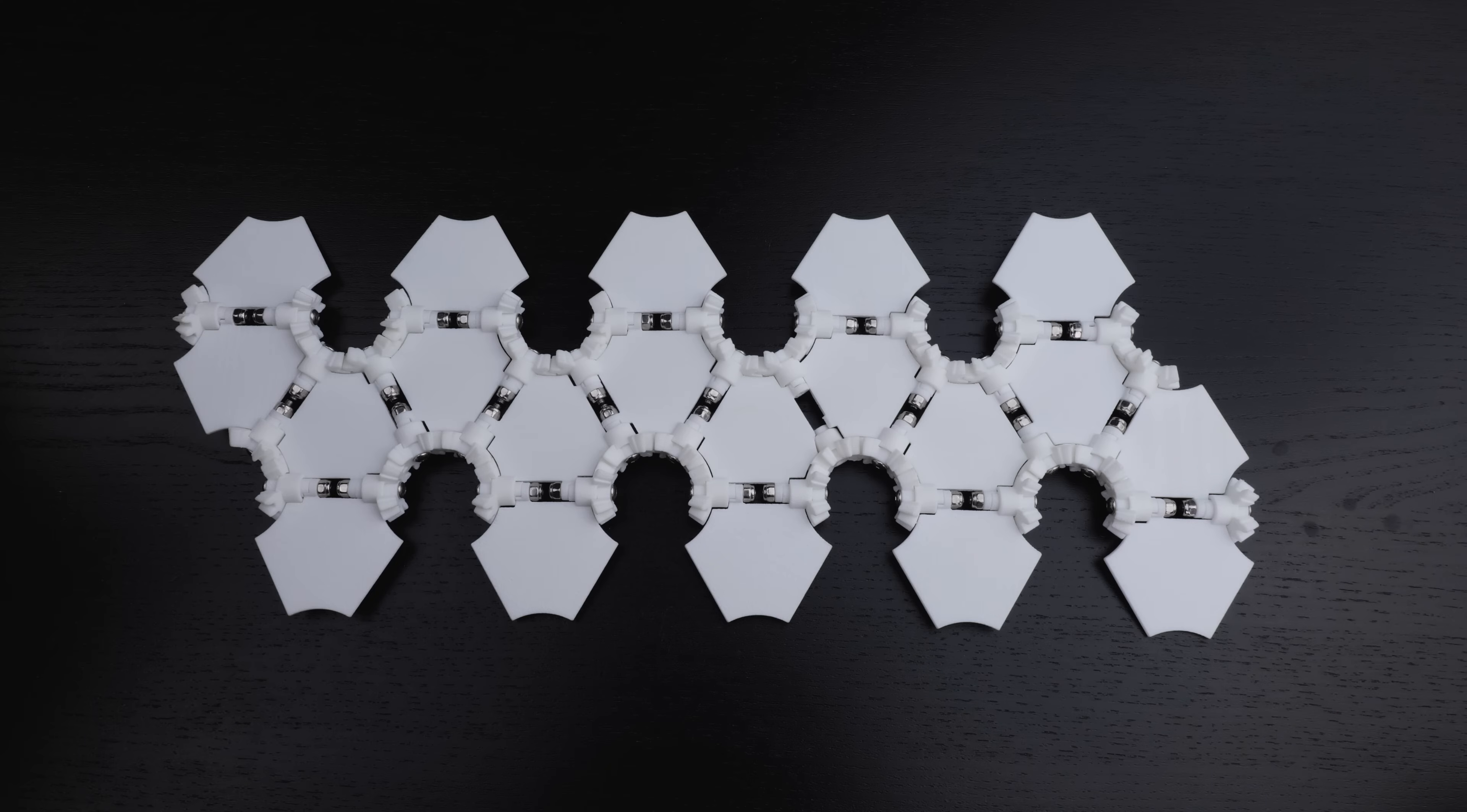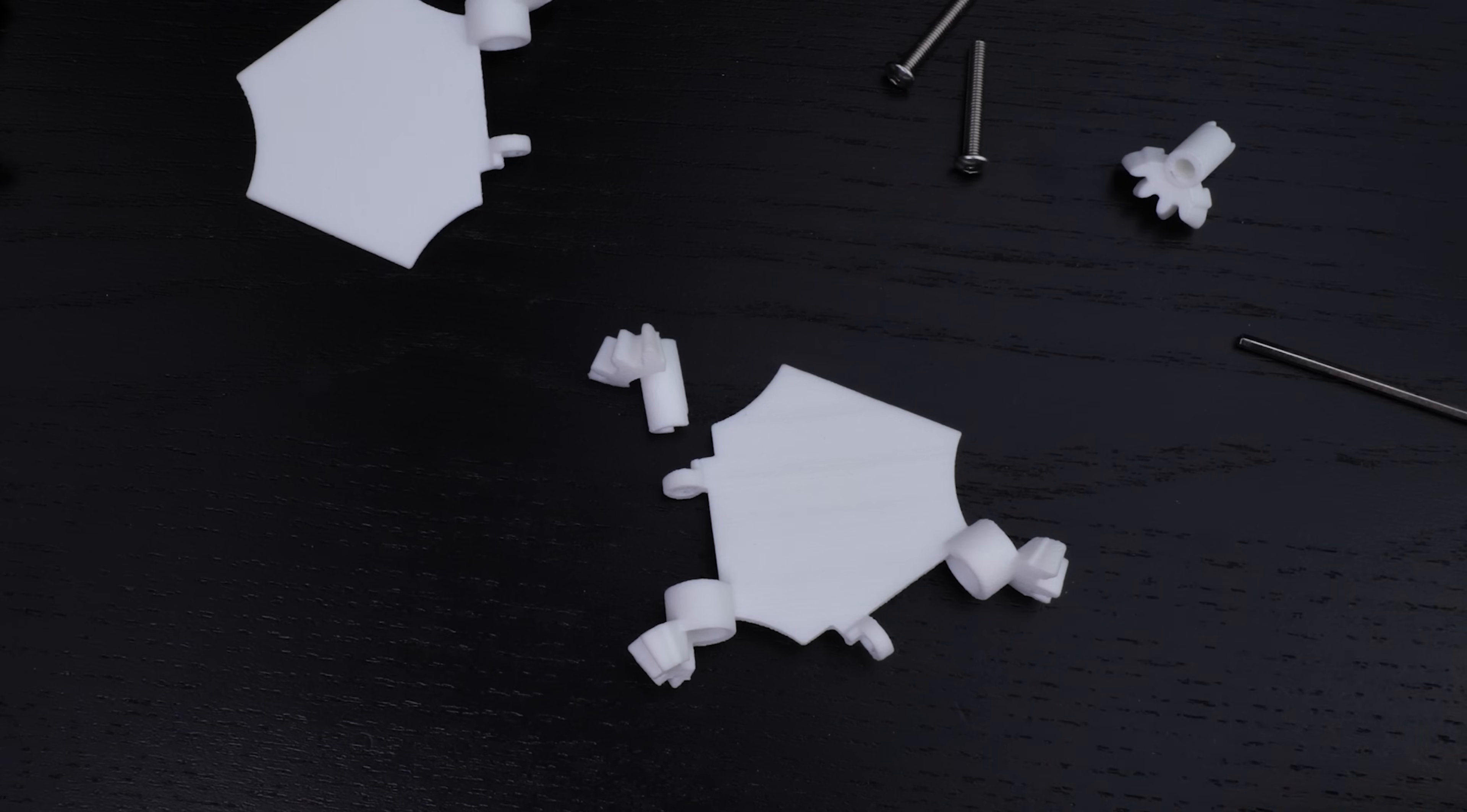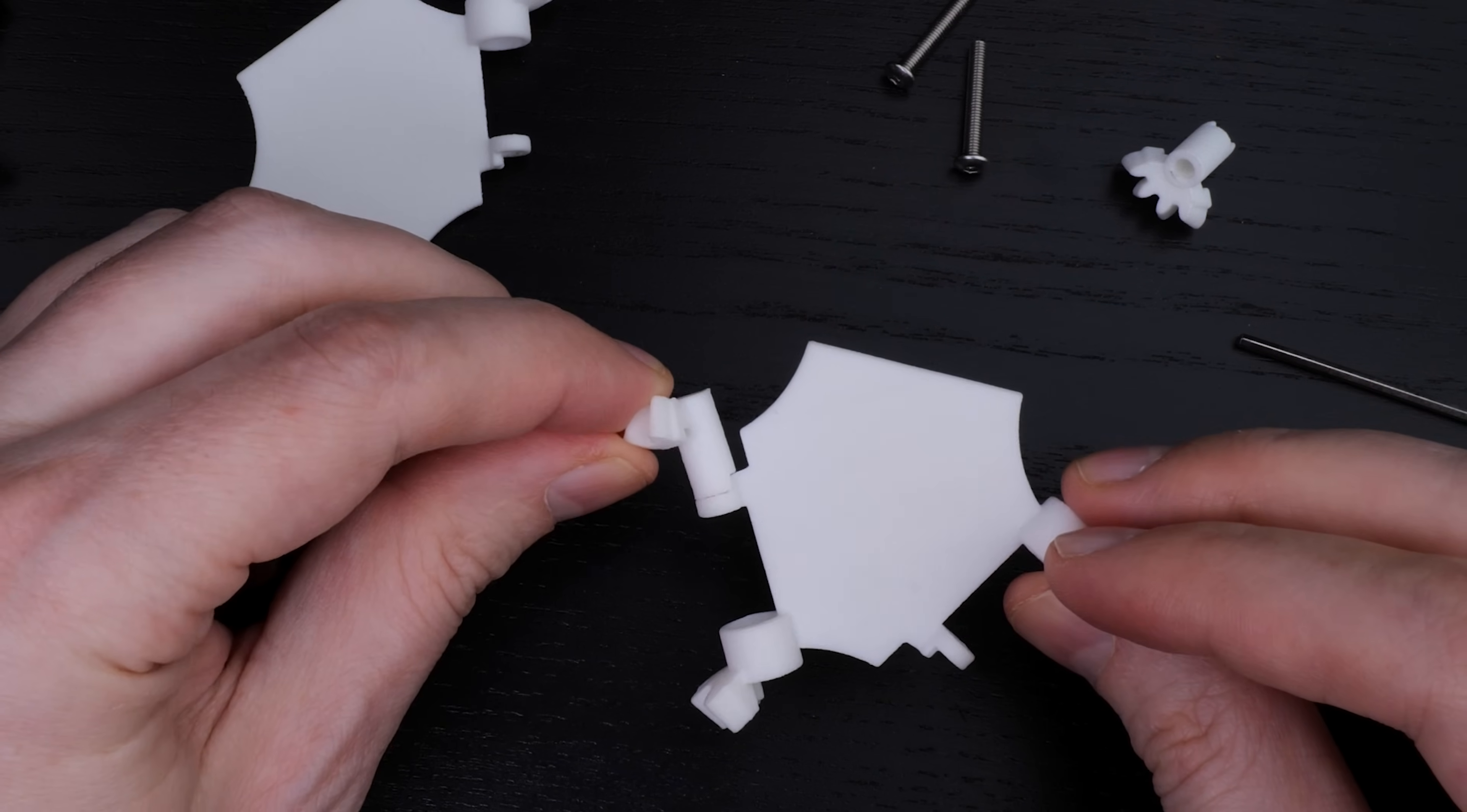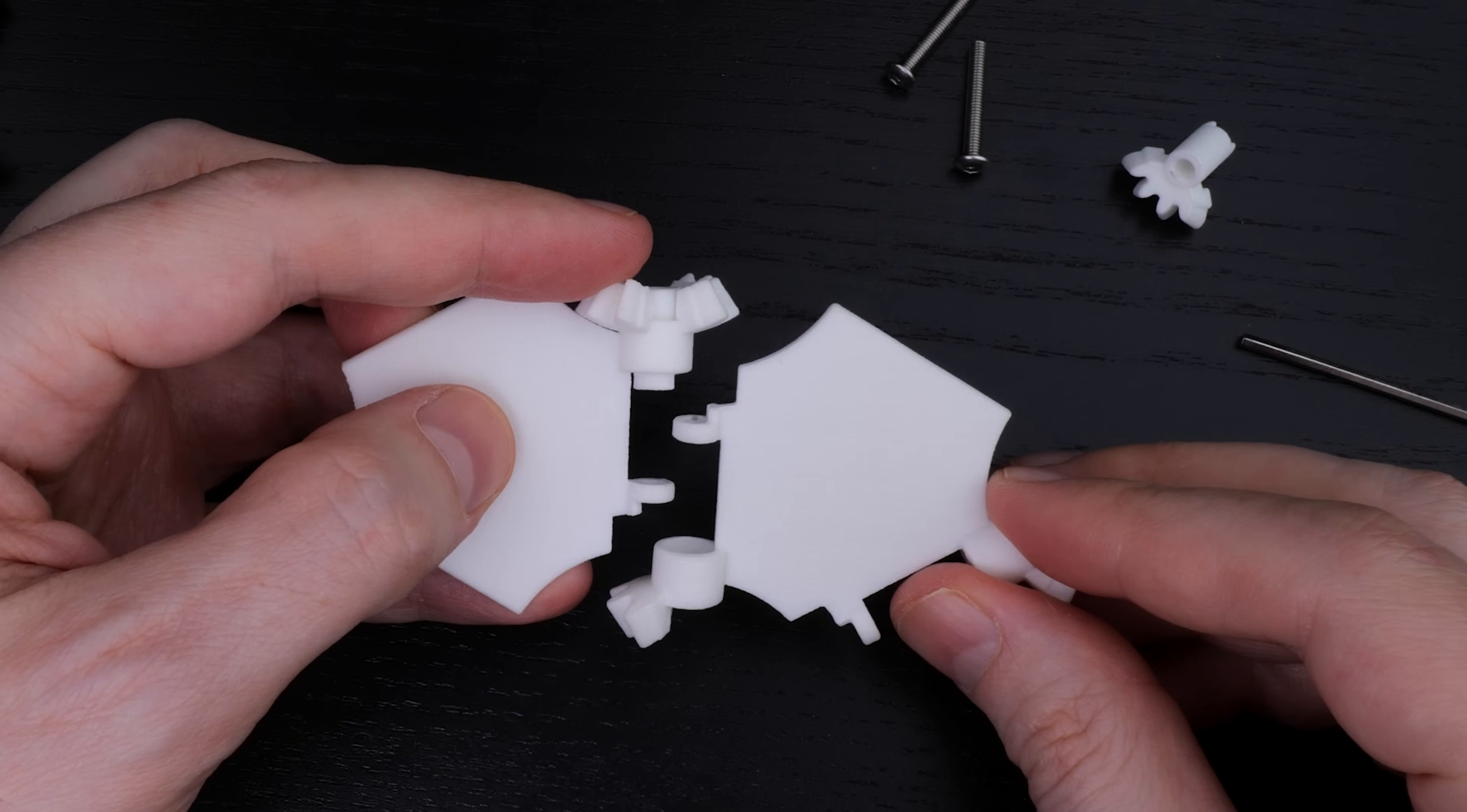I managed to break that first prototype by over-tightening a bolt, which leads us to the first thing to try to improve. The nested axles are cool, but one issue with them is that the gear part has to be made separately from the rest of its triangle, and then the two connected together. Otherwise there would be no way to get the gear through the barrel.